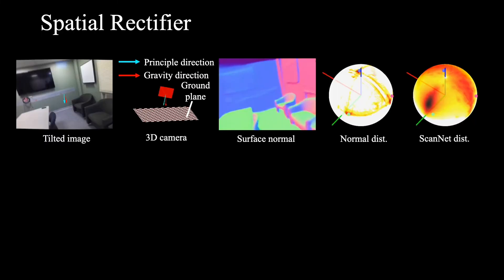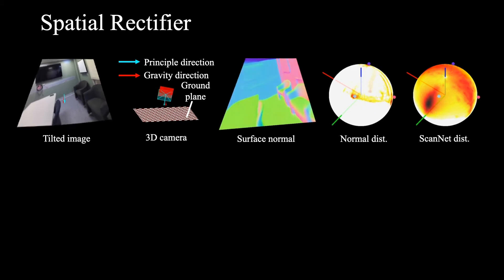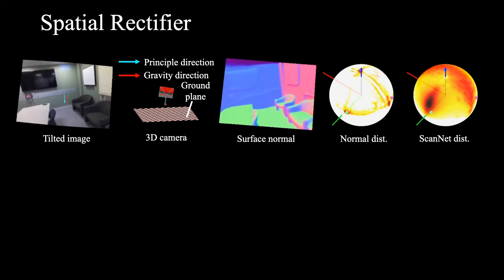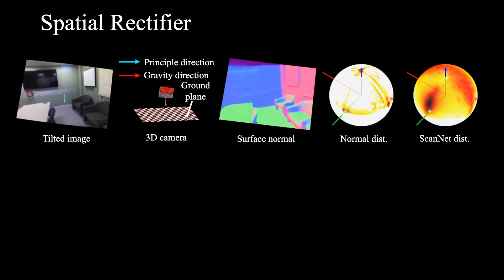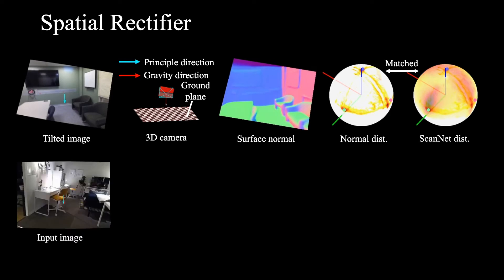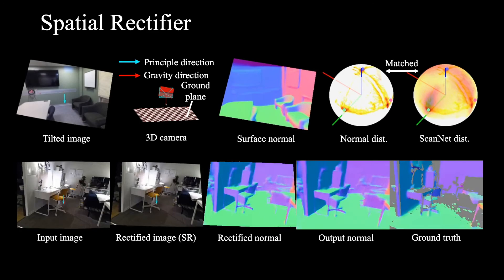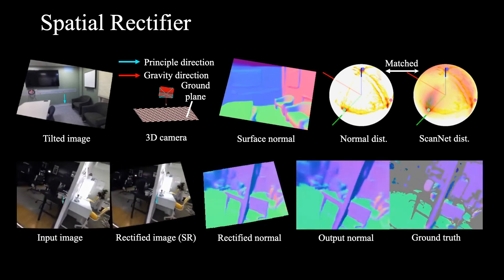We propose a spatial rectifier designed to learn a transformation to minimize this distribution gap. Given an input image, we use the spatial rectifier to warp the image where the surface normal estimator can predict accurately, and warp back to the input domain.